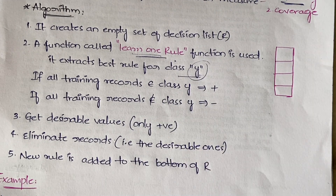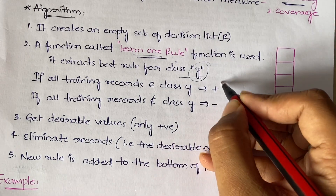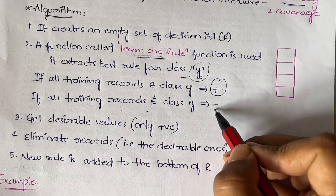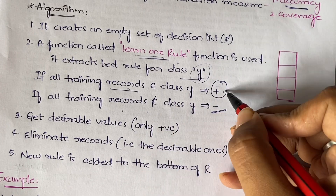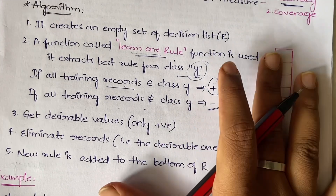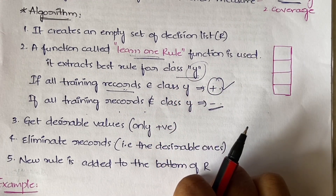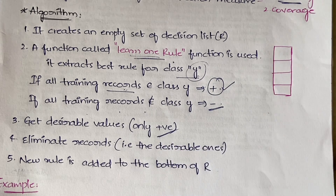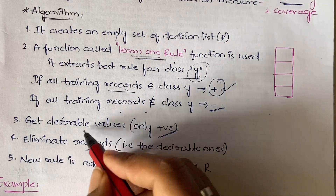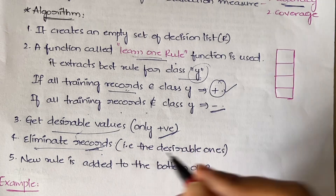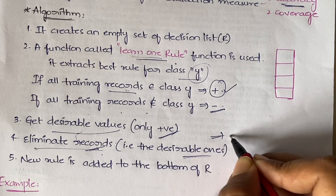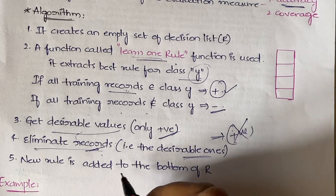If a training record belongs to class Y, it is categorized as positive; if not, it is categorized as negative. You then extract all the desirable — that is, positive — values. Once you collect all positive values, you eliminate those records. Eliminating the records means you are removing the positive ones from the dataset.